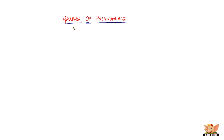In this video we are going to look into the graphs of polynomials. In the previous video we looked at different kinds of them — linear polynomial, quadratic polynomial, and cubic polynomial. What we're going to do now is see what kind of shapes each of the different polynomials gives us when we graph them.